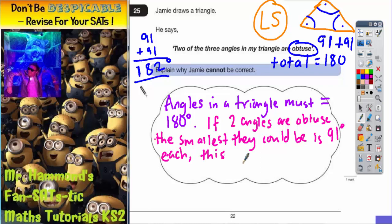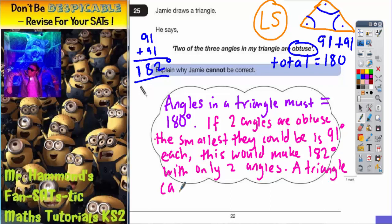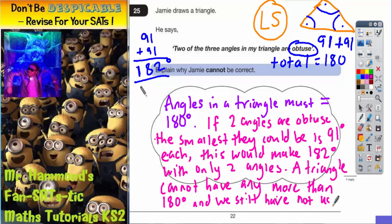This would make 182 degrees with only two angles. A triangle cannot have any more than 180 degrees. And we still have not used a third angle.